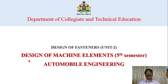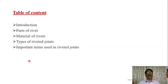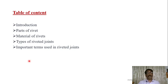Welcome all. Today's session covers riveted joints from unit two on the design of fasteners. We will discuss the introduction and parts of a rivet, material of rivets, types of riveted joints, and important terms used in riveted joints. This includes the definition of rivets and riveted joints, what is a permanent fastening, what is a temporary fastening, and the uses of rivets.